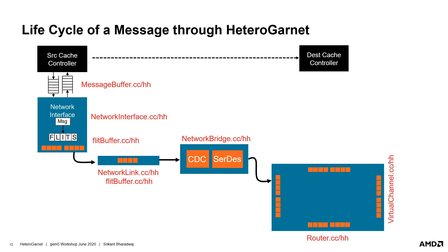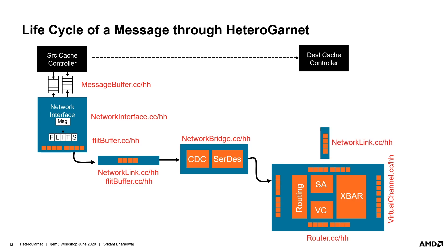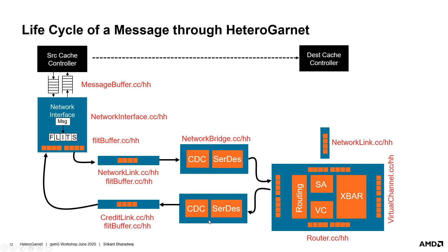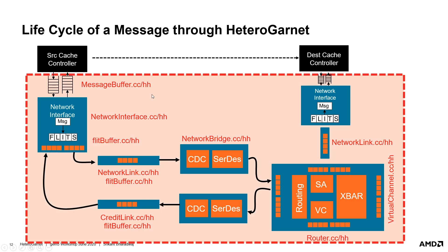The flit is captured in one of the input flit buffers of the router. The router can have multiple inputs and thus multiple input flit buffers. The flit then goes through the detailed router pipeline of VC allocation, switch allocation, and then crossbar. Eventually, the flit is scheduled to be transmitted through one of the output links. Heterogarnet also supports credit-based flow control, so control information about free space is transmitted back to the sender through a separate set of links called credit links. Once this information reaches the source, it can send more flits. The data message progresses forward through multiple links, bridges, and routers, eventually reaching the destination network interface where all flits are combined into a message again, which is then pushed into a return message buffer read by the destination cache controller.